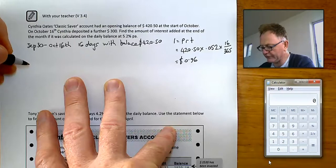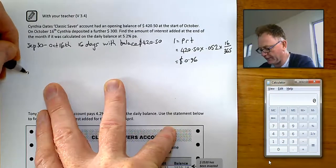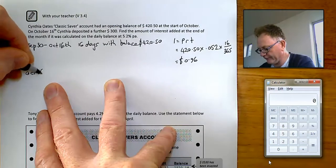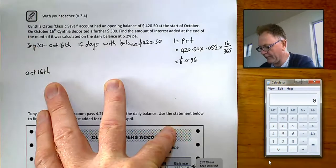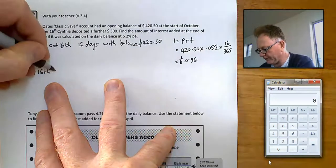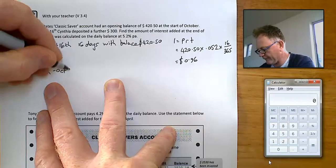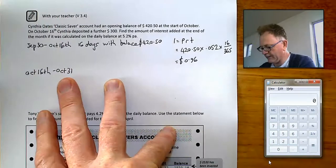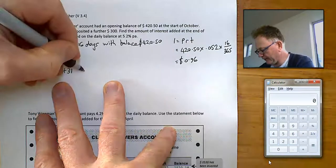Then for the rest of October. That means from October the 16th, right until the end of the month, there's 31 days in October. 31 minus 16 is 15 days.